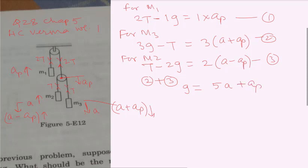And if I substitute this into 3, I get t minus 2g equals 2a minus 2ap, and a I will substitute from here: g minus ap upon 5.